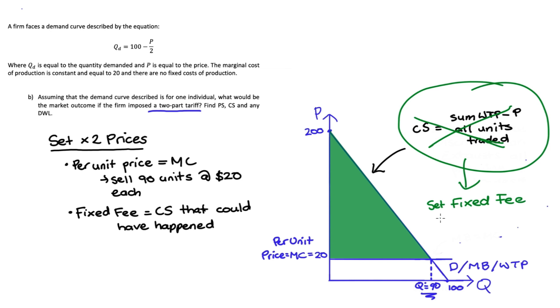Now the fixed fee is like an access fee. The consumer has to pay it in order to access the market, and we can think about it as a way of the firm extracting additional surplus from the consumers. So the consumer surplus that the firm takes away really represents the maximum additional willingness to pay that the consumer has for those 90 units over and above the per unit fee.